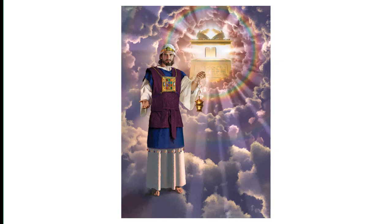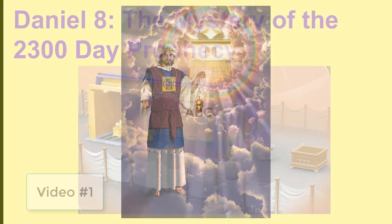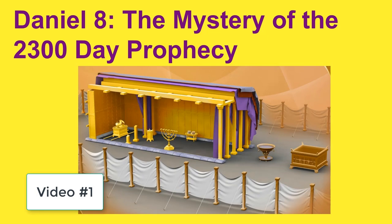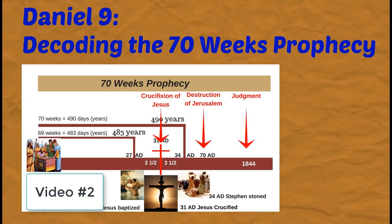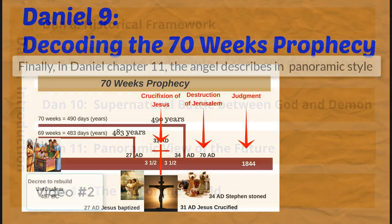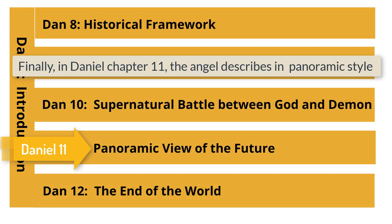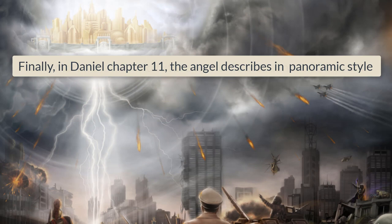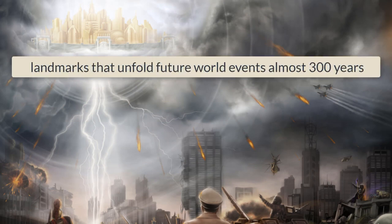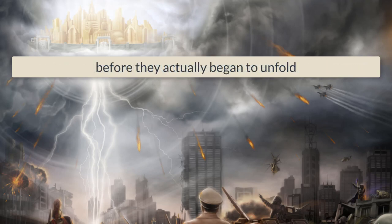After his resurrection, he went to heaven and currently serves in the heavenly sanctuary. For more details, see my video on the sanctuary service and read the book of Hebrews, which explains the heavenly sanctuary and the intercessory work that Jesus is performing for us at this time. Finally, in Daniel chapter 11, the angel describes in panoramic style landmarks that unfold future world events almost 300 years before they actually began to unfold.